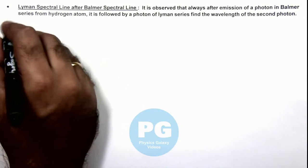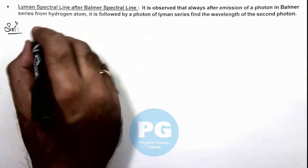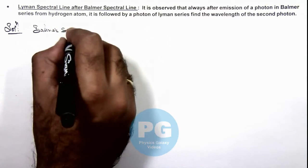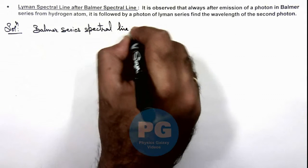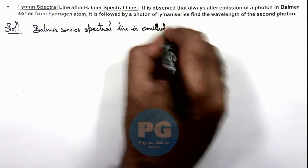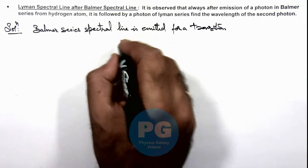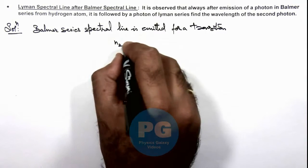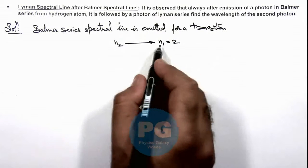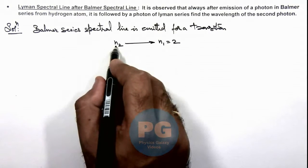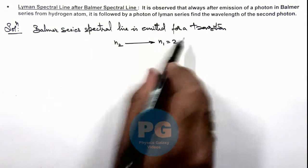In this situation we know that when we talk about the Balmer series, a Balmer series spectral line is emitted for a transition when any n2 value transitions to n1 equal to 2. This is the higher energy level and this is the lower energy level. Whenever a transition from a higher orbit to the second energy level takes place, the spectral line emitted will fall in the Balmer series.